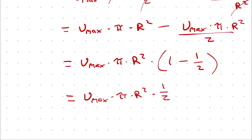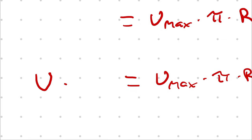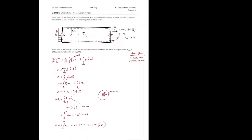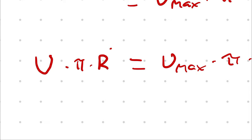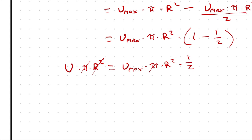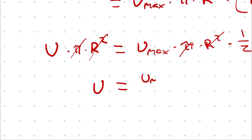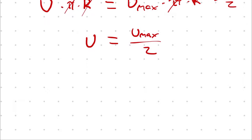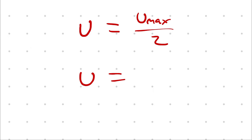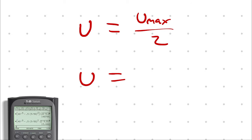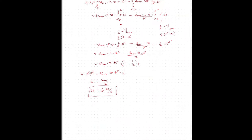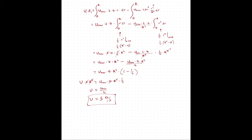The left-hand side was U times A₁ = U times πR², since the inlet area is πR² with radius 3 inches. So U · πR² = u_max · π · R² · ½. The π and R² cancel on both sides, giving U = u_max / 2. Since u_max was 10 feet per second, U = 10/2 = 5 feet per second. The inlet velocity is 5 feet per second.